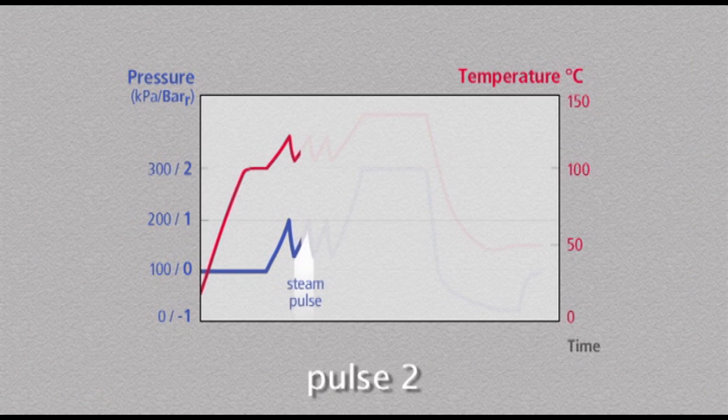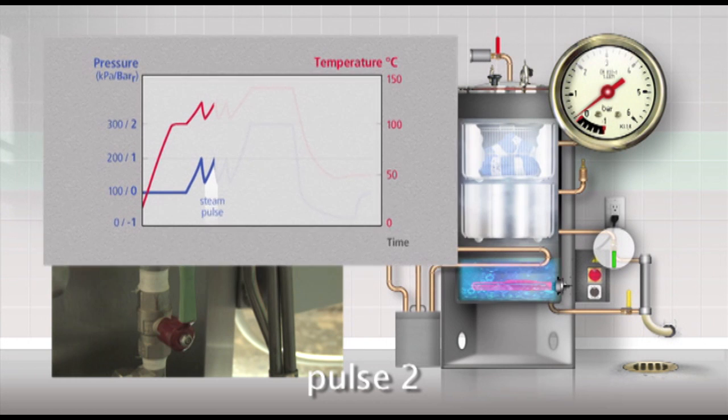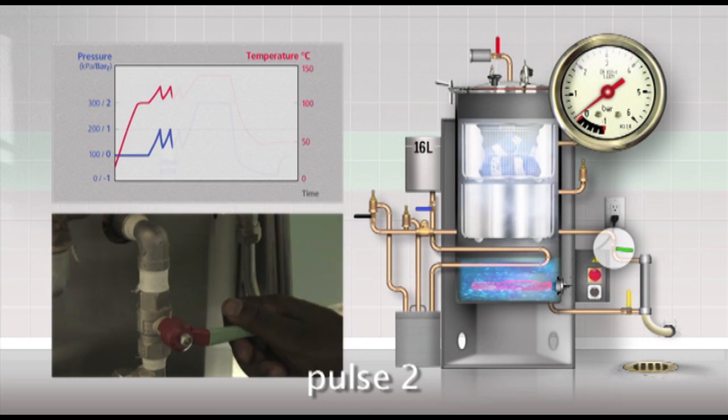Allow the pressure to build up a second time to 1 bar. Then open the green pressure release valve again. Let the pressure drop to 0.2 bar and then again close the green pressure release valve.